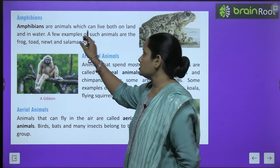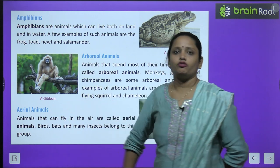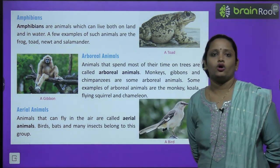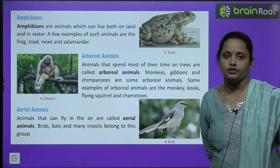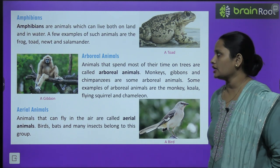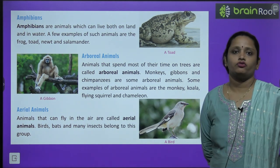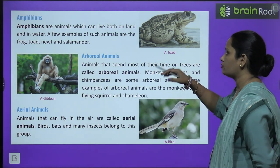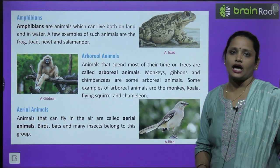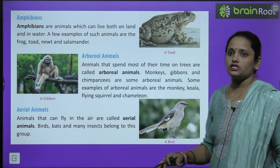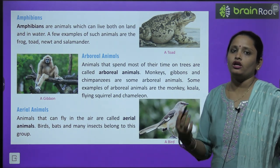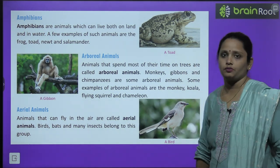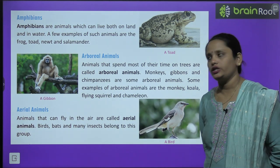Animals which can live both on land and in water are called amphibians. Some examples of amphibians are frog, toad, newt, and salamander. You can see a picture of a toad as an example.